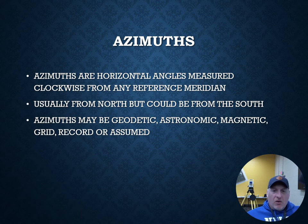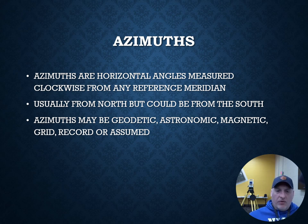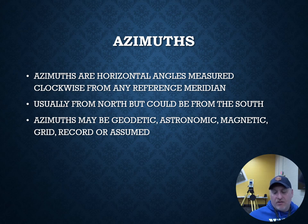Azimuths are horizontal angles measured clockwise from any reference meridian. You can reference them from north, east, south, or west — you just have to call that out. For our purposes, we're either going to reference them from north or from south, and we'll cover both. Azimuths can be any of the different meridian types: geodetic, astronomic, magnetic, grid, record, or assumed. For most of our work, we'll be using a grid or magnetic reference, and the math is the same regardless.